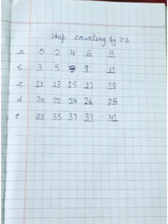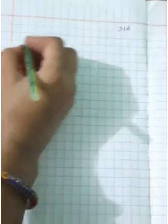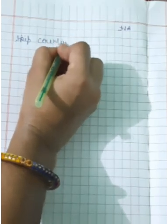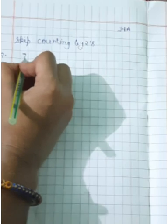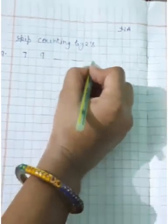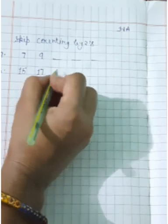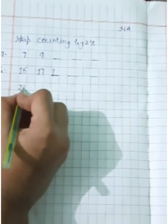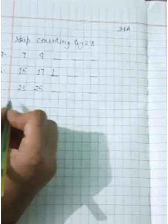Next page. You will do this work in your notebook and some homework for you. You will write homework. This is your classwork. You will mention here classwork. You will mention here H, skip counting by 2s. A part: 7, 9, 3 boxes are here. B part: 15, 17, 1 box is here. You will leave, write 3.